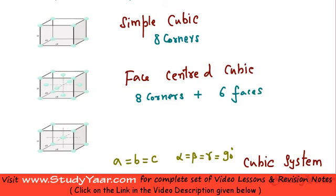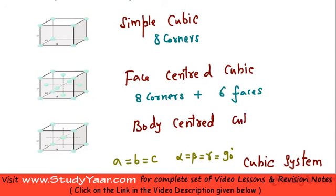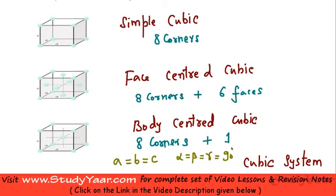This one is known as a body-centered cubic lattice. In body-centered cubic, you have eight corners corresponding to eight lattice points, and at the center of the cube you have one additional lattice point. So you have eight corners plus one body-center point. That was about simple cubic, face-centered cubic, and body-centered cubic.